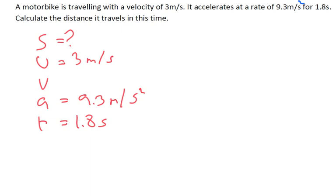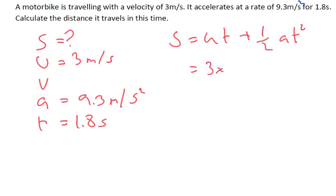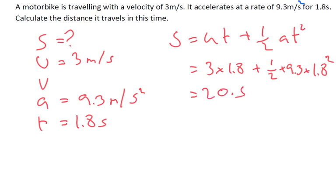We need an equation with s, u, a, and t, so we're going to use s equals ut plus a half at squared. Putting the numbers in: 3 times 1.8 plus a half times 9.3 times 1.8 squared. After putting that in the calculator, I get a distance of 20.5 meters.